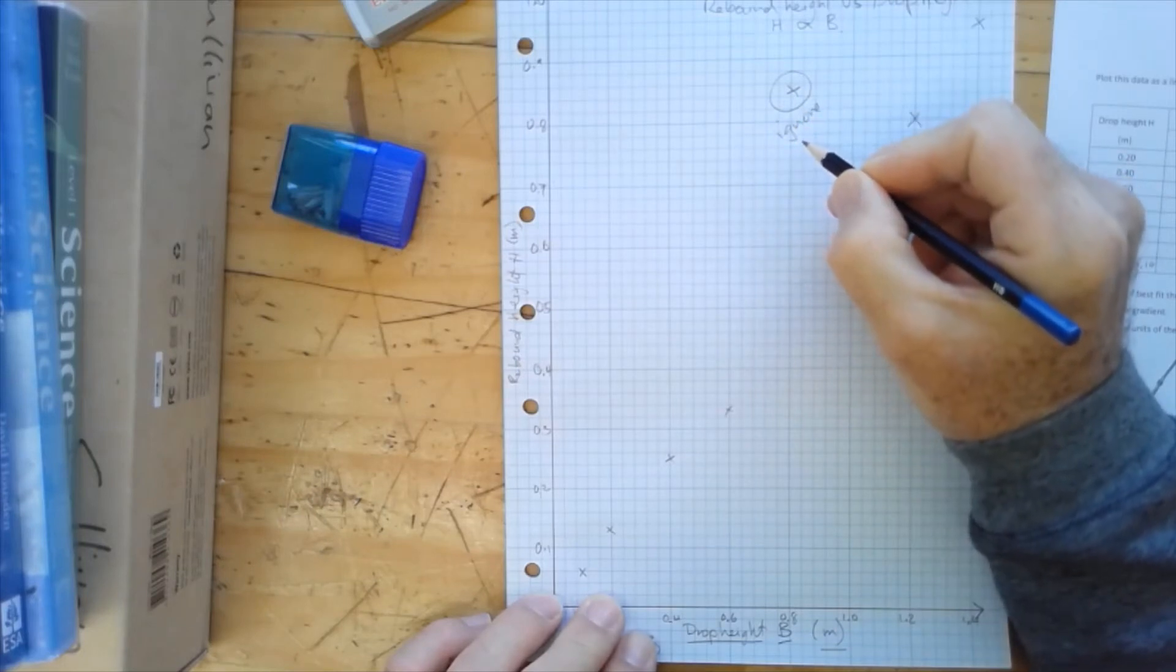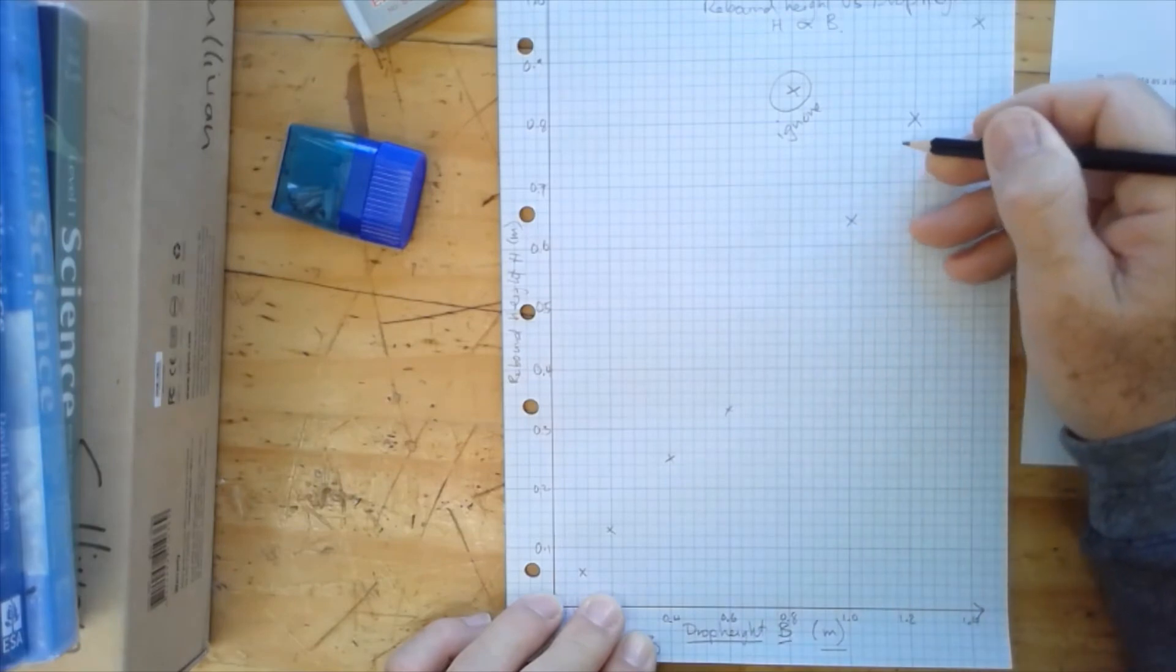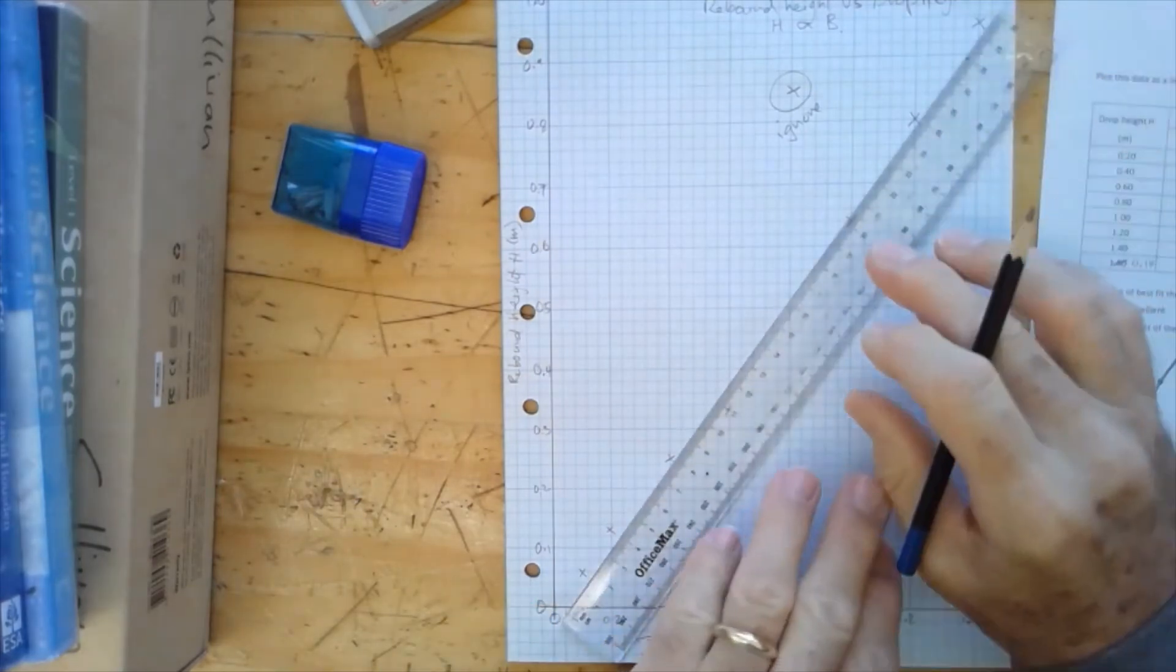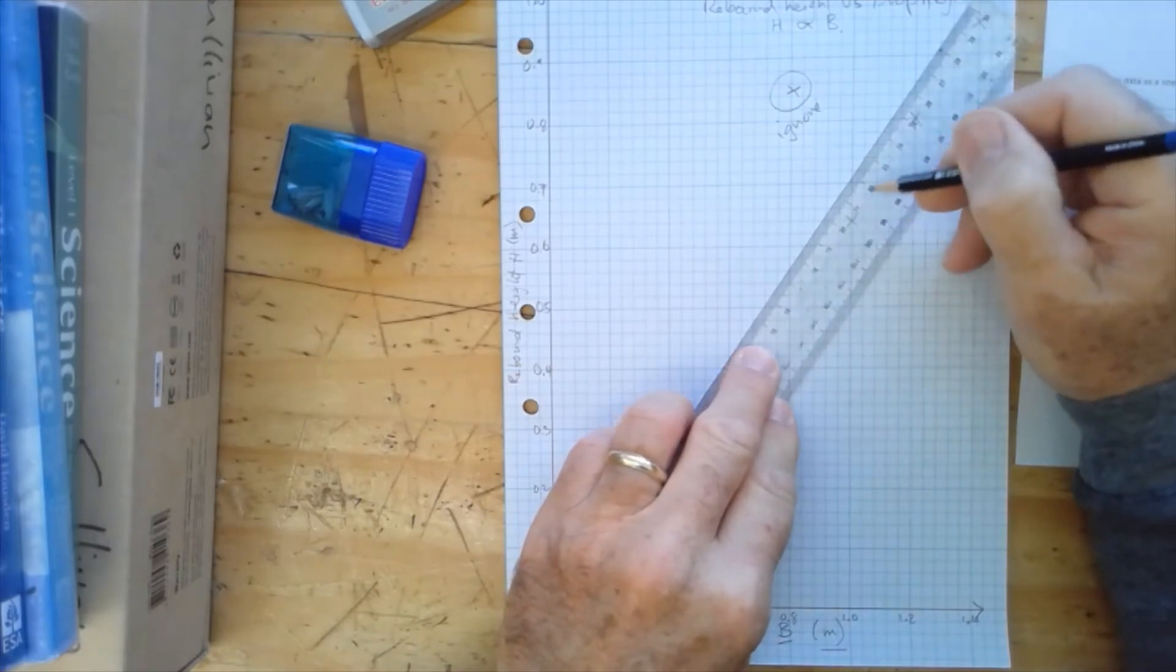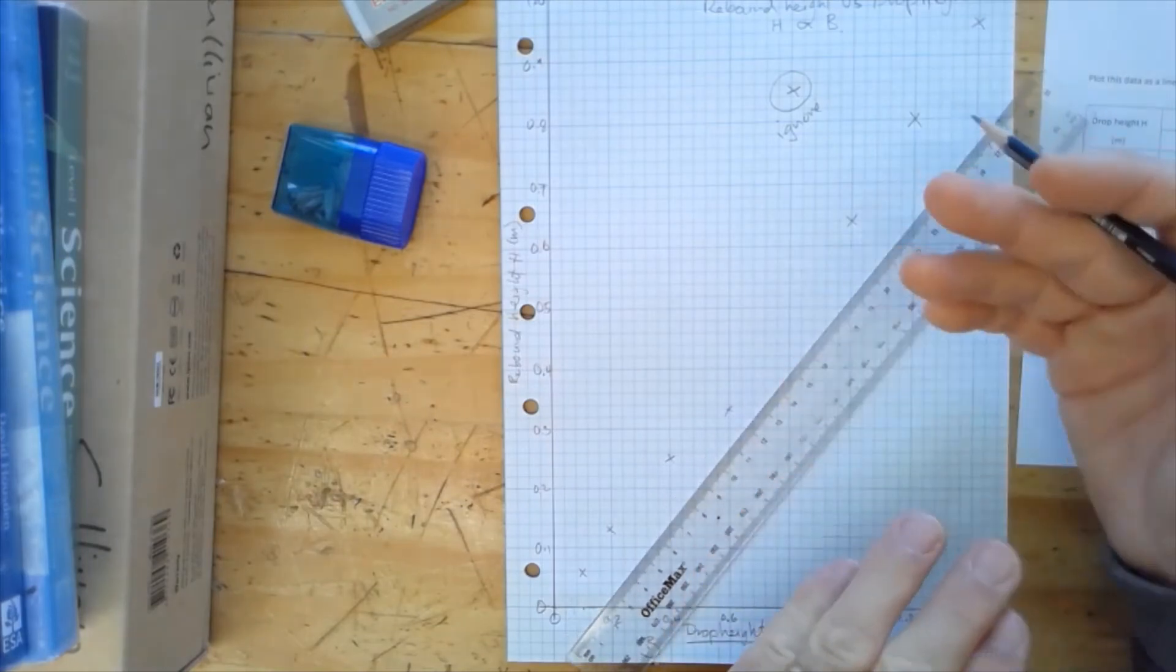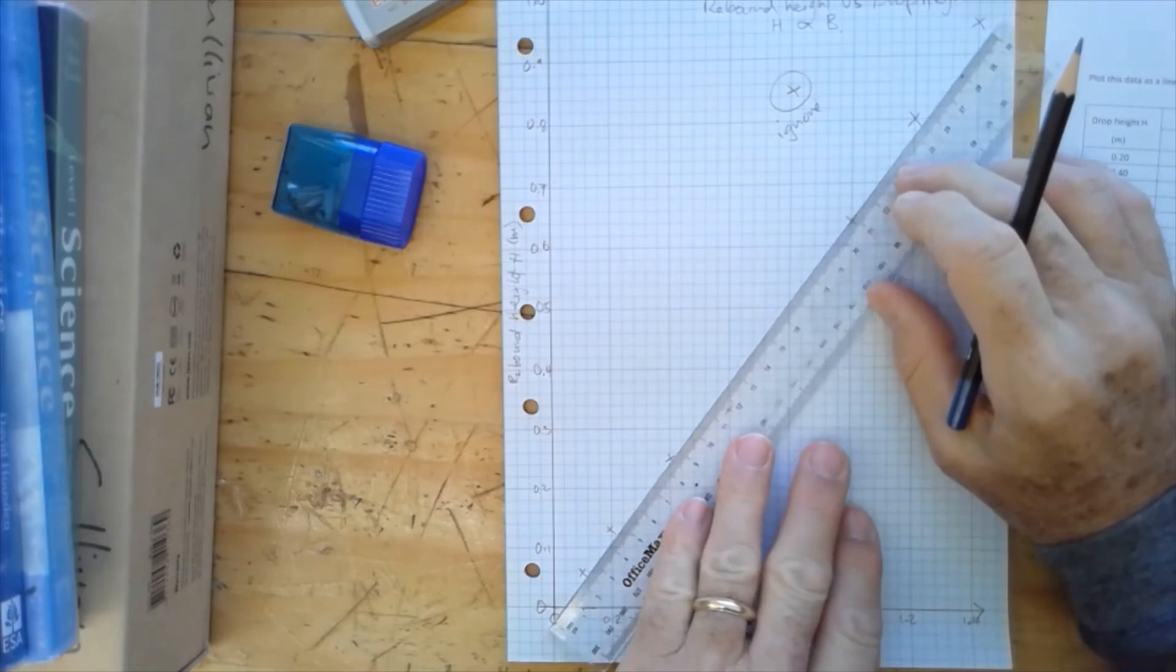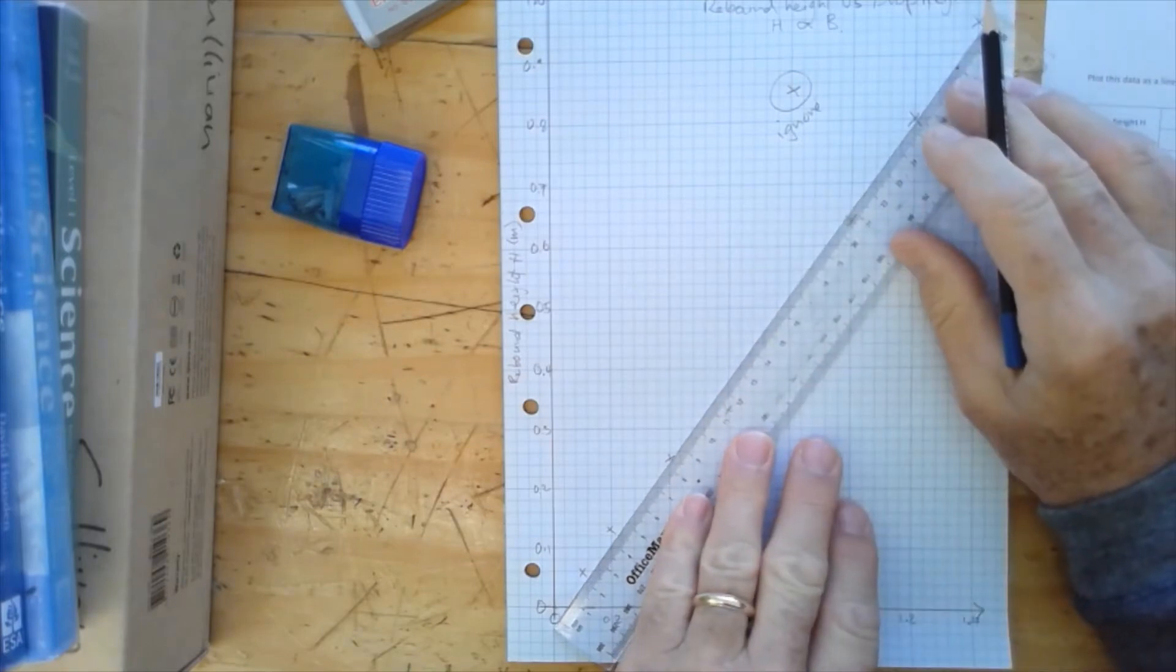So we're going to ignore that point, and later on in the discussion we'll try and explain why we think that point was so far out of our sequence. So we've drawn our points, what we need to do now is draw a line of best fit, and we should use a clear plastic ruler so we can see the points through the ruler.